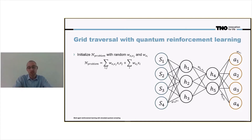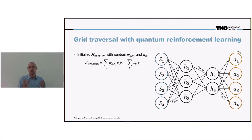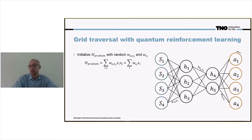This neural network can be translated to a QUBO formulation — a quadratic unconstrained binary optimization formulation. This formulation is what we can use on the D-Wave machine, on the quantum annealer that we have run this algorithm on.